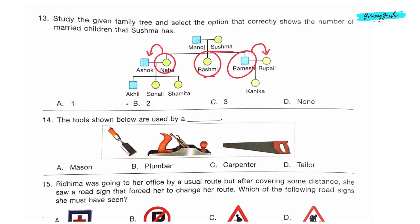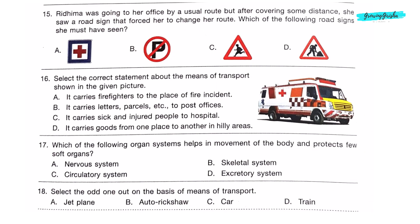Question 14: The tools shown below are used by a carpenter. The tools shown in the picture are chisel, hand plane and handsaw, which are used by a carpenter. So option C is the correct answer. Question 15: Ridhima was going to her office by a usual route, but after covering some distance she saw a road sign that forced her to change her route. There must have been some construction going on which forced Ridhima to change her route. So option D is the correct answer: Men at Work.